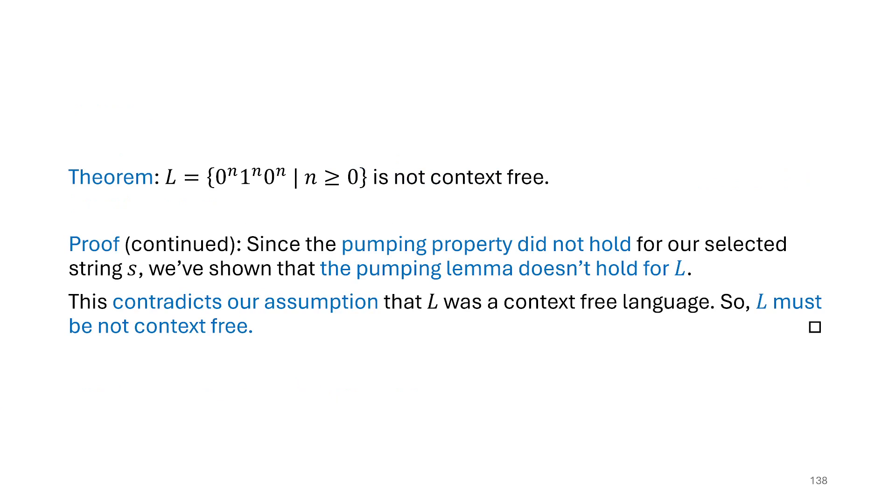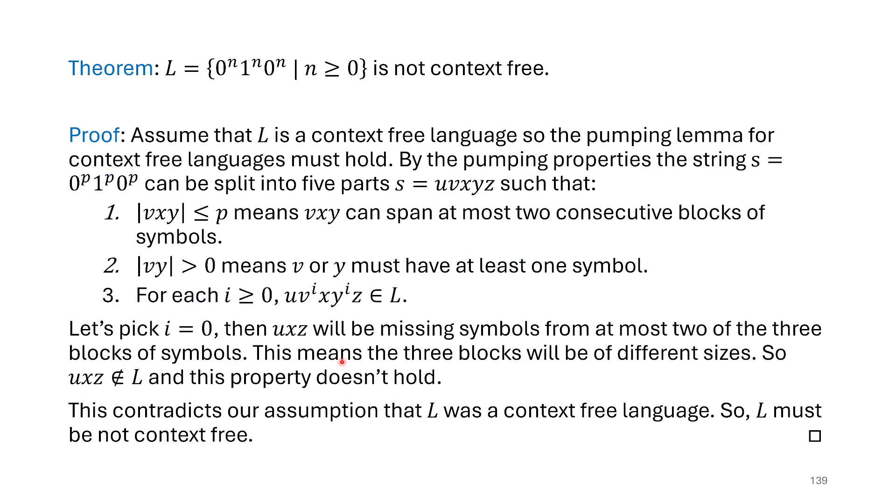That actually concludes. We can just do what I call the postamble and say, well, since the pumping lemma did not hold, this is a contradiction. And therefore, the language that we thought was context-free must not be context-free. So this is our first example of a pumping lemma proof for context-free languages. Let's sort of look at it in more of its completed form. I've pulled out some of the extra comments made along the way, but we picked our S to be 0 to the P, 1 to the P, 0 to the P.